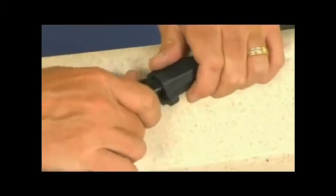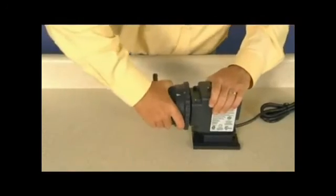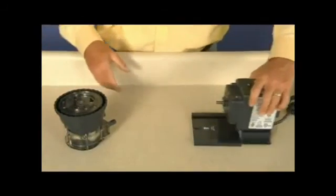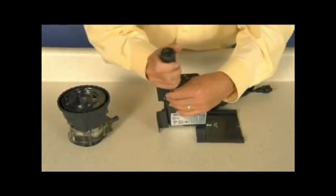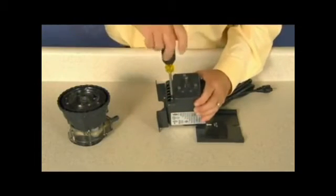To replace gears, disconnect power to the pump. Separate the feed rate control and pump head from the motor. Remove the four Phillips head screws from the gear case cover and remove the gear case cover.